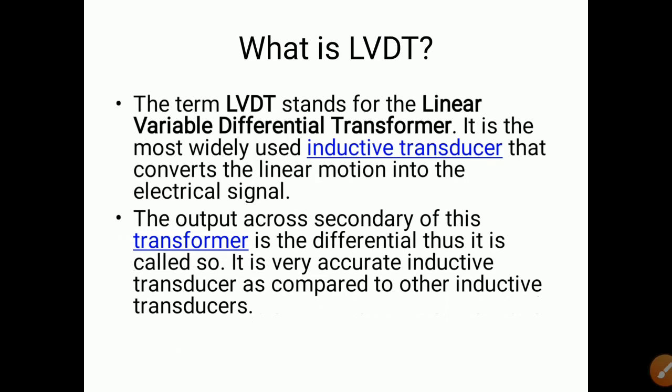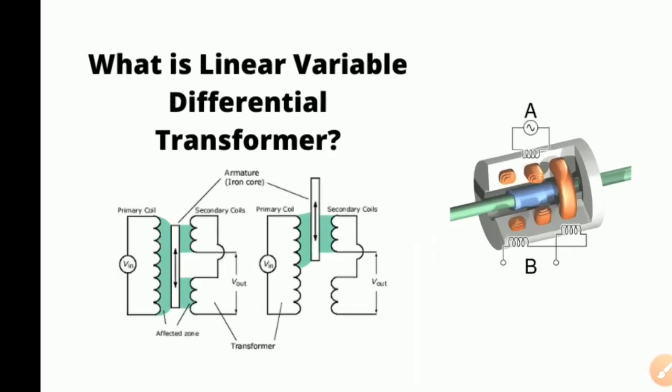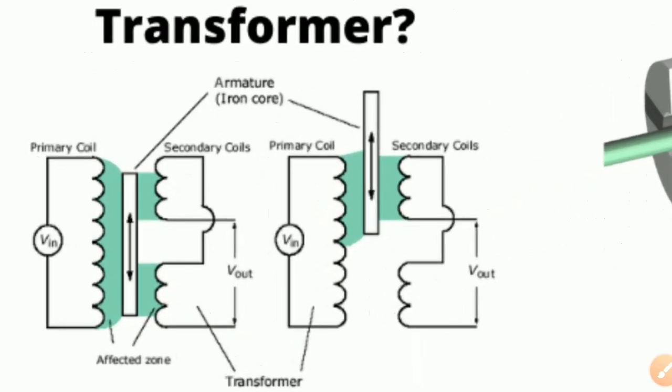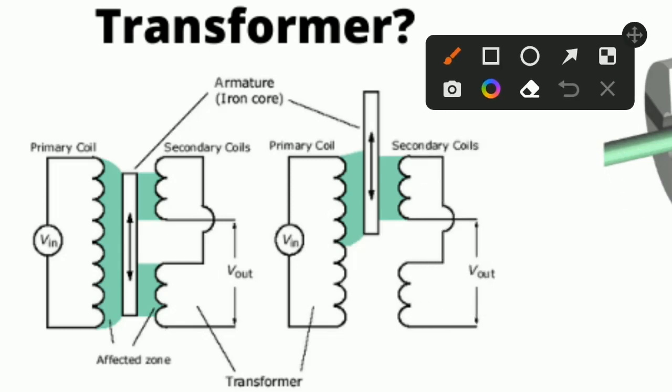The output across the secondary of this transformer is differential, and it is a very accurate inductive transducer compared to other inductive transducers. So we will study what is LVDT. One diagram is shown here. We will go from left to right. Here, the primary coil is shown — this part is the primary coil. We give input supply V-input to this primary coil.